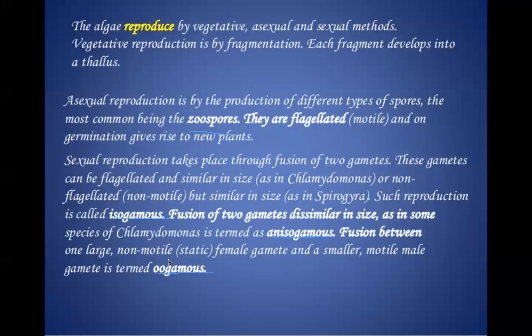To summarize: isogamous type means both gametes are of the same size and cannot be distinguished morphologically. Anisogamous means they are dissimilar in size and can easily be distinguished. Oogamous is the type in which the female gamete is quite larger than the male gamete.